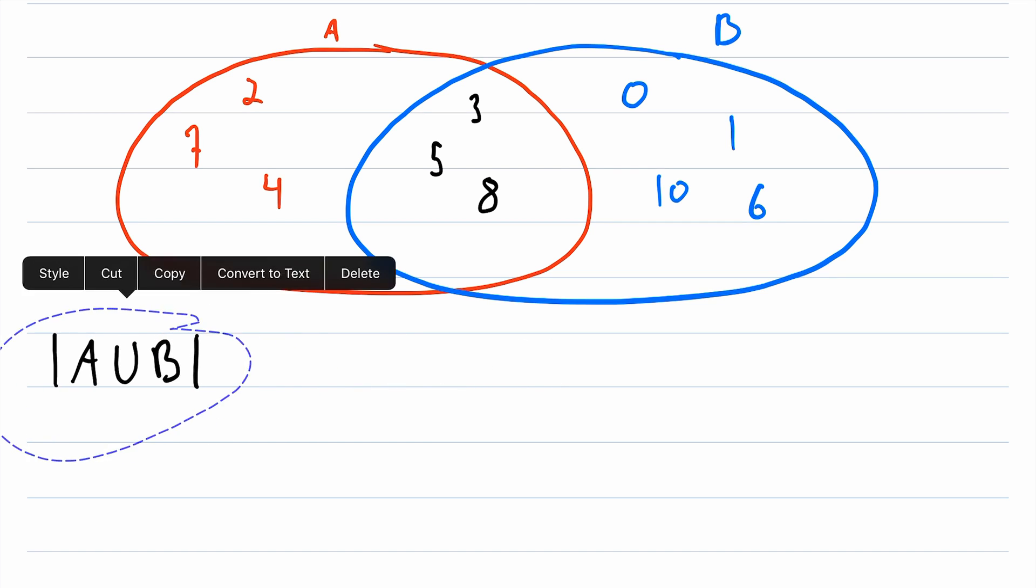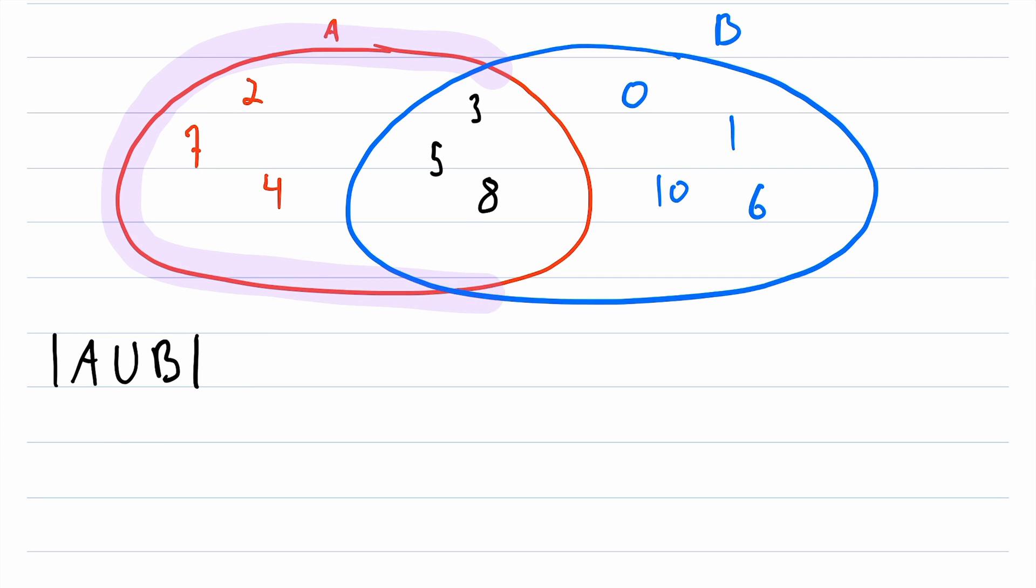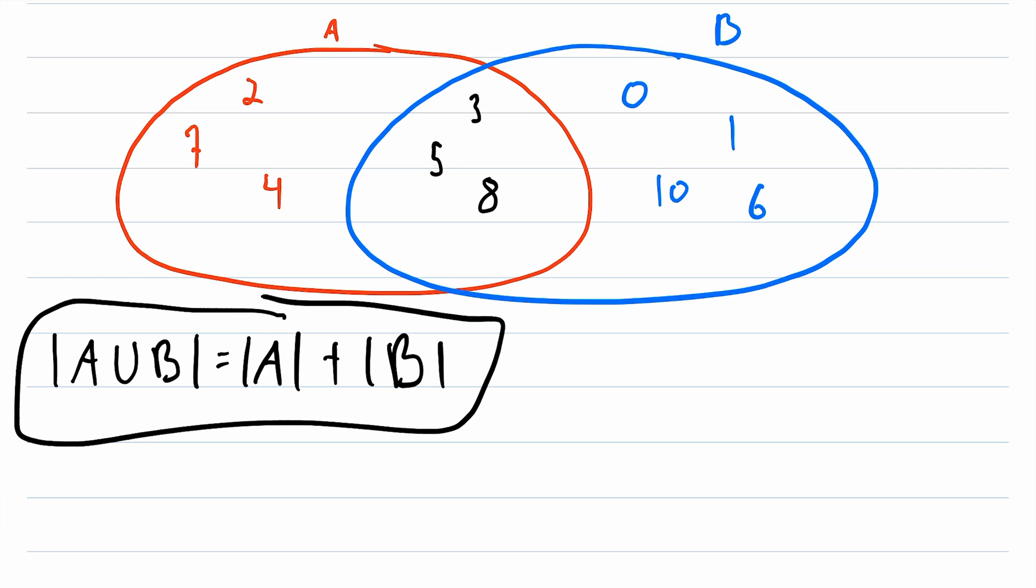So the cardinality of A union B, how do you think we find that? We know that the set A union B is this set here that I am highlighting. It's the set that contains all of these elements. Since the set A union B puts all of the elements in A and B together, you might be tempted to say that the cardinality of A union B is equal to the cardinality of A plus the cardinality of B. But this is not quite right. Do you see what's wrong with it?